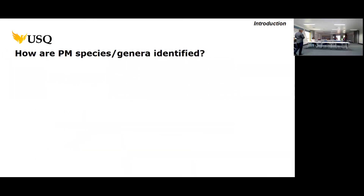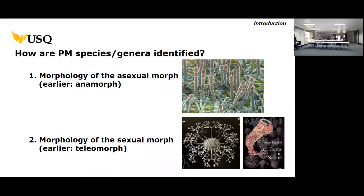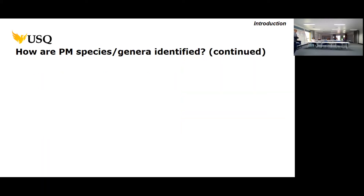Now, a few ideas about how powdery mildew species are generally identified — this is important for the rest of the talk. First, light microscopy to check the asexual morphs of powdery mildew. These structures have a beautiful geometry, and already in the 19th century, in the book Art, Forms and Nature — available online — there are drawings by Ernst Haeckel of these beautiful structures as visible under the light microscope.